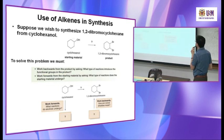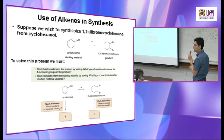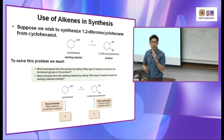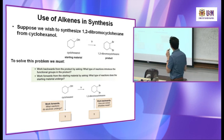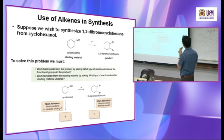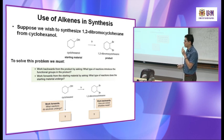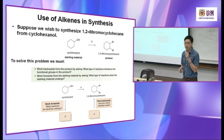Now, retrosynthesis: if you want to convert a hydroxyl group to a dibromo compound, this is your starting material and that is the desired product. You work backward — how can you make the dibromo compound? It comes from addition to an alkene. And how do you produce an alkene from an alcohol? Dehydration. So it's only two steps.